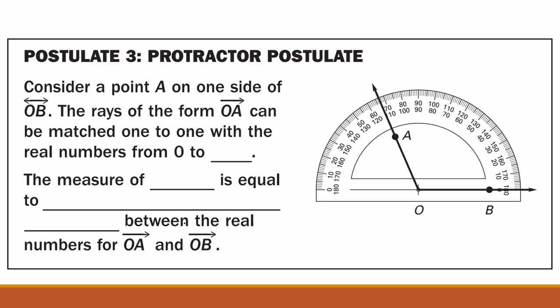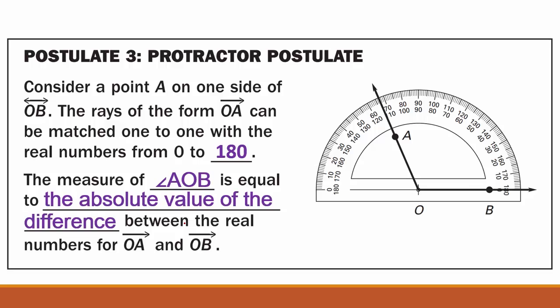Postulate three, Protractor Postulate. Consider a point A on one side of line OB. The rays of the form Ray OA can be matched one to one with the real numbers from 0 to 180 degrees. The measure of angle AOB is equal to the absolute value of the difference between the real numbers from Ray OA and Ray OB.